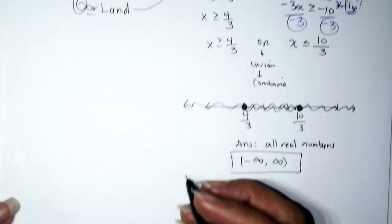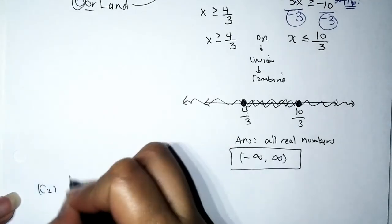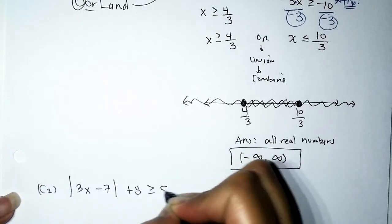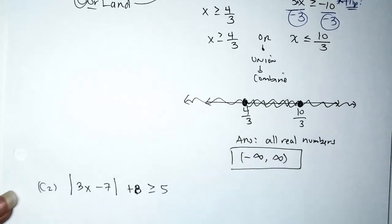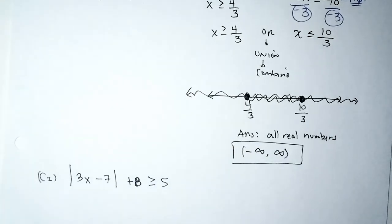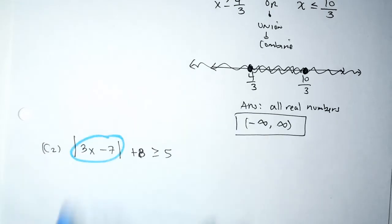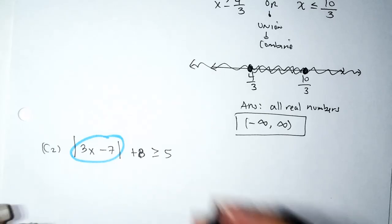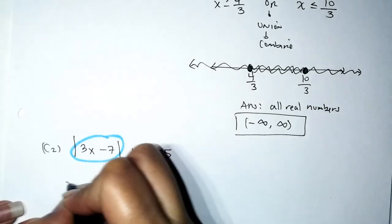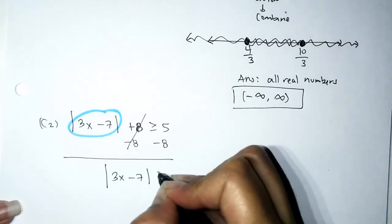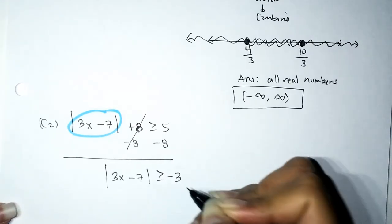Now let's do the same problem using the shortcut. We isolate the absolute value — subtract 8 from both sides — and get: absolute value of (3x − 7) ≥ −3. This is where we pause: the absolute value is being compared to a negative number.